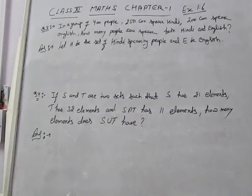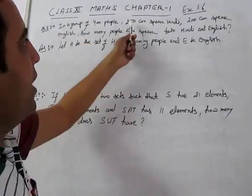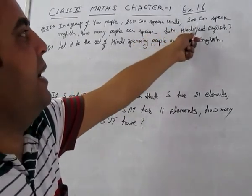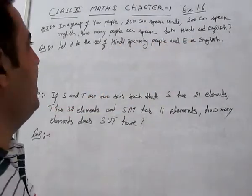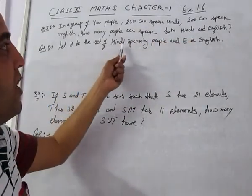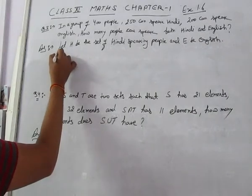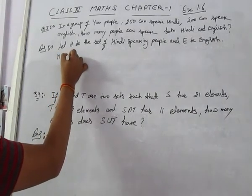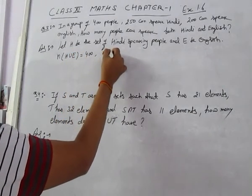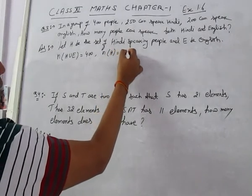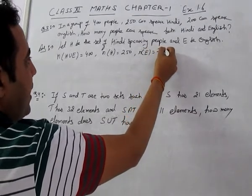Exercise 1.6, question number 3. In a group of 400 people, 250 can speak Hindi and 200 can speak English. How many people can speak both Hindi and English? Let H be the set of Hindi-speaking people and E be the set of English-speaking people. Then n(H∪E) = 400, n(H) = 250, n(E) = 200.